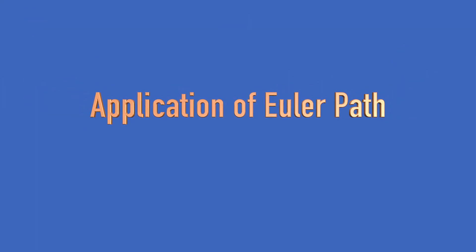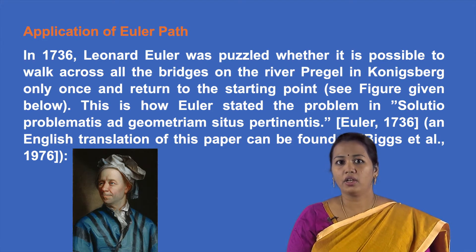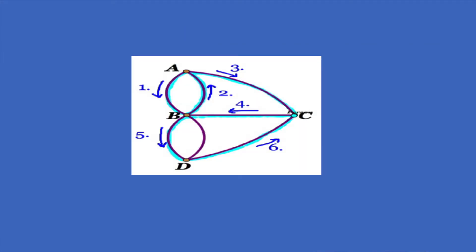In the previous section we saw the circuit, cycle and various other definitions. We will be studying the Eulerian circuit and the Hamiltonian cycle in the upcoming modules. Let us now concentrate on the Euler path and some of its applications. In 1736, Leonard Euler was puzzled whether it is possible to walk across all the bridges on the river Pregel in Königsberg only once and return to the starting point.